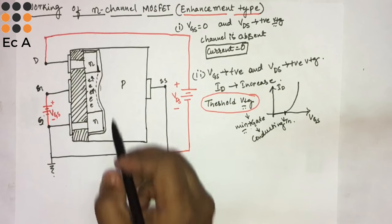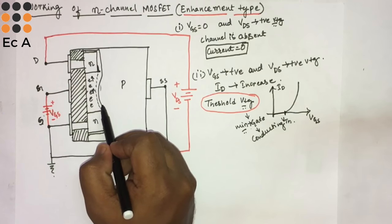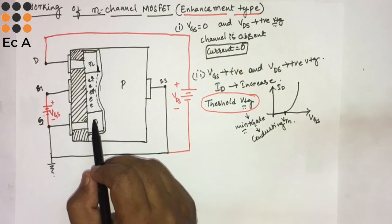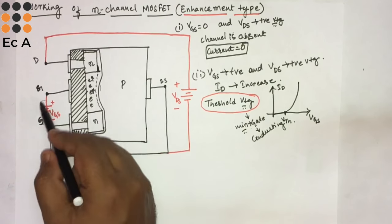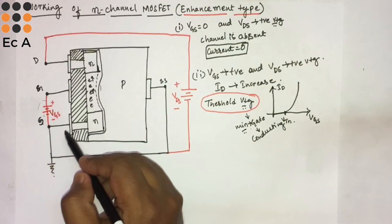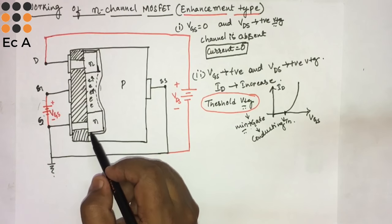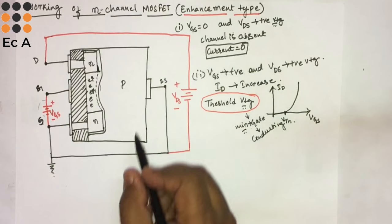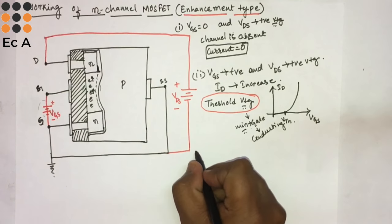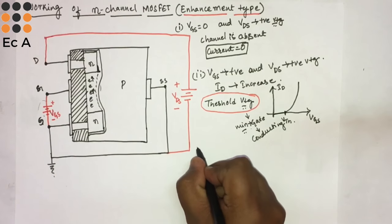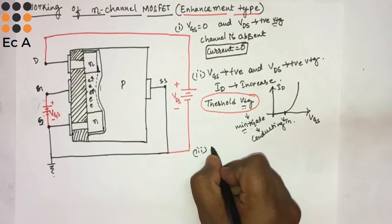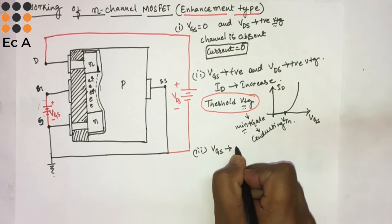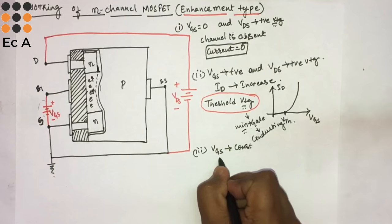Since the channel did not exist earlier and was enhanced by the application of voltage across the gate, this type of MOSFET is known as the enhancement type MOSFET.